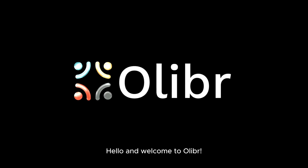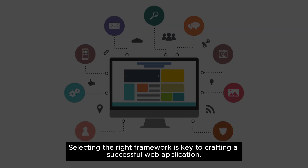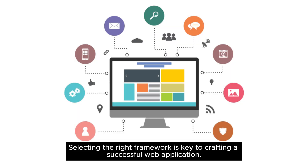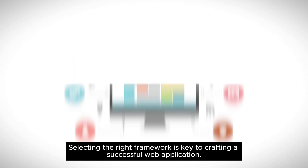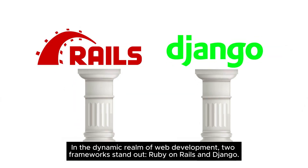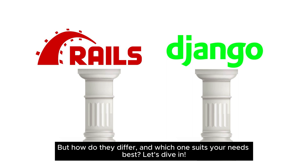Hello and welcome to Olibr. Selecting the right framework is key to crafting a successful web application. In the dynamic realm of web development, two frameworks stand out: Ruby on Rails and Django. But how do they differ, and which one suits your needs best? Let's dive in.